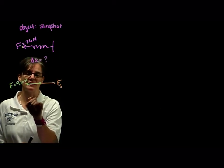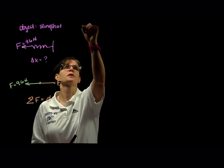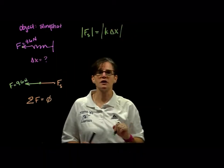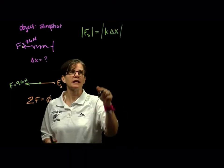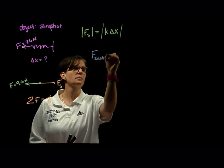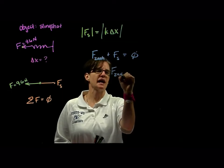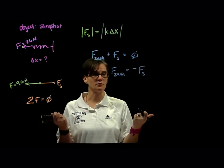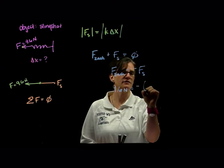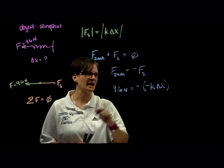If Zachary is holding that spring steady, we know that the sum of these two forces is equal to 0. Our spring force — the magnitude of our force on a spring — is equal to k delta x. Since I'm just looking at magnitude, I'm not going to worry about the direction right now. We know that the force by Zachary plus the force of the spring equals 0, which tells us that the force by Zachary is equal to minus the force of the spring. They're working in opposite directions. The force of Zachary is 9.6 newtons, and the force of the spring is negative k delta x.